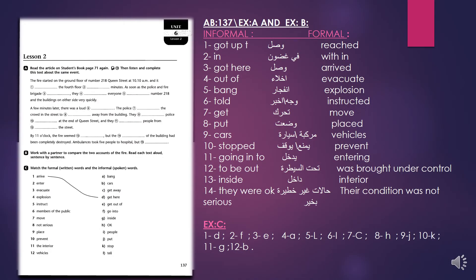Now go to your activity book on page 137. In exercise A, read the article on student book page 71 again, then listen and complete the text about the same event — but this time it is written in spoken English, informal language. So you use the same events but in the informal, spoken English style.